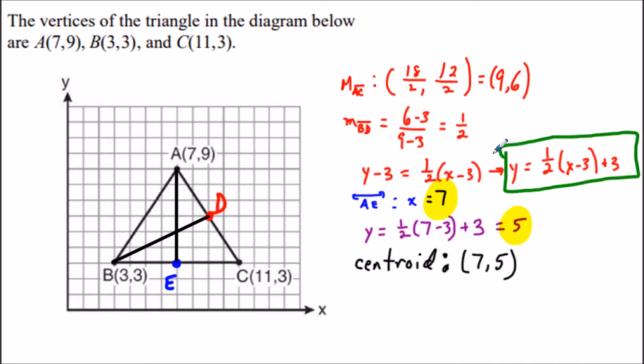Next, we write the equation of line AE, which is x = 7. Now we have two linear equations. To solve this system, we substitute x = 7 into the first equation, and we get y = 5, giving us the centroid coordinates (7,5).